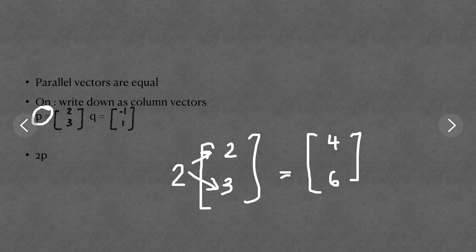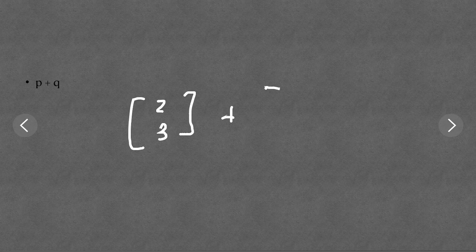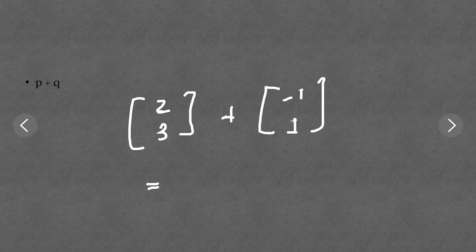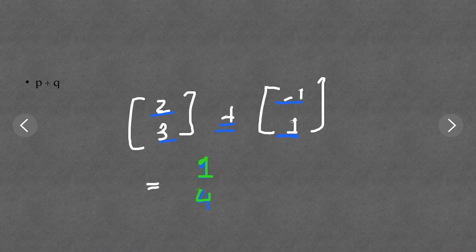For P plus Q: we know P is (2, 3) and Q is (-1, 1). Adding component by component: 2 plus minus 1 gives 1, and 3 plus 1 gives 4. So the answer is (1, 4).